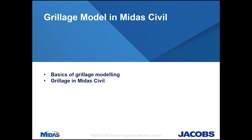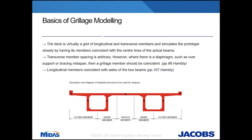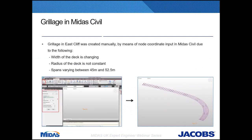A grillage is essentially a grid of longitudinal and transverse members where longitudinal members are coincident with the centre lines of actual beams. Best practice is to use one beam per longitudinal member, making analysis easier. Regarding transverse spacing, this is an arbitrary parameter, however where there is a diaphragm at mid-span or other support the grillage member should be coincident. There are seven spans in Eastcliff Viaduct varying between 45 and 52.5 metres. We divided each span by 10, and this arrangement also worked well for intermediate diaphragms, though we had to create more cross-sections to reflect those changes.